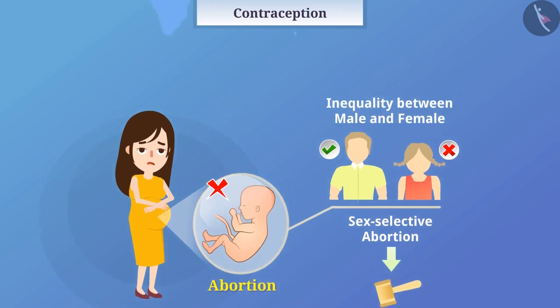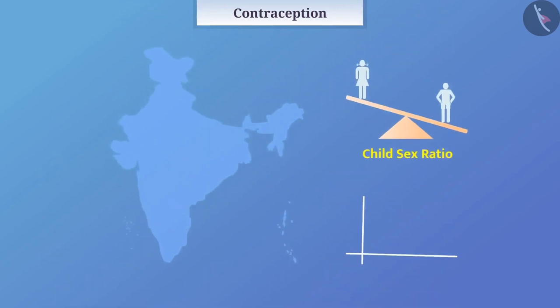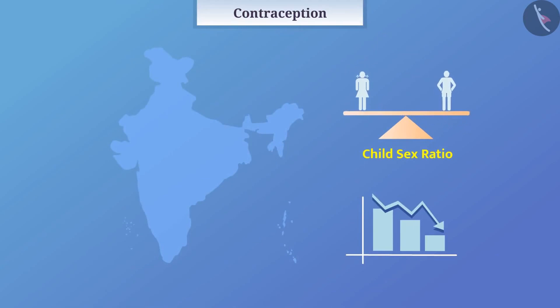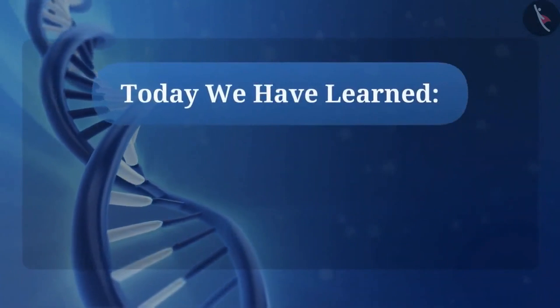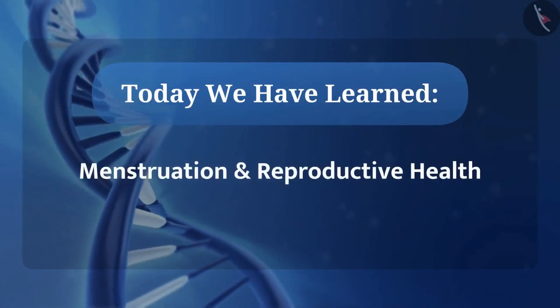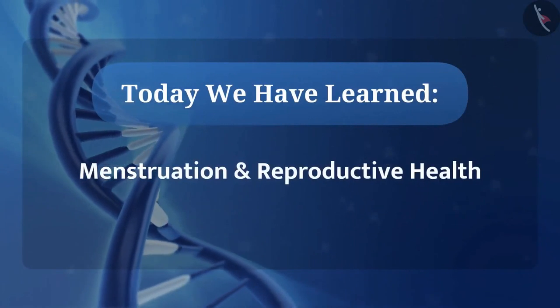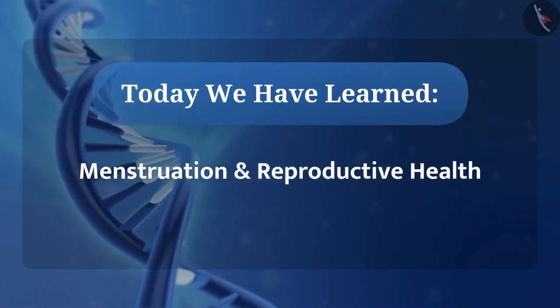Due to this, the child sex ratio in our country is decreasing sharply. We need to maintain the male-female sex ratio for a healthy society. Today we have learned about menstruation and reproductive health.